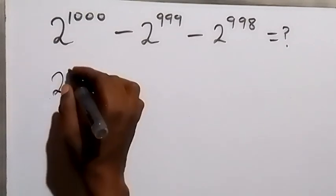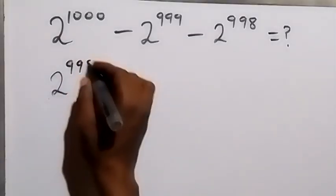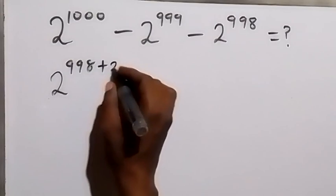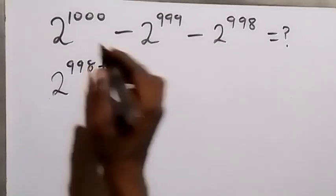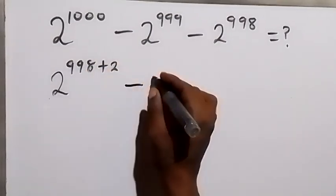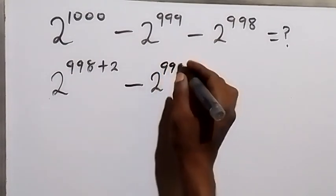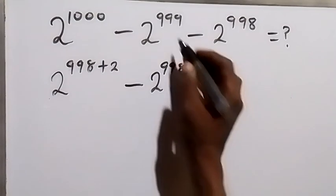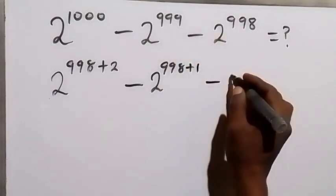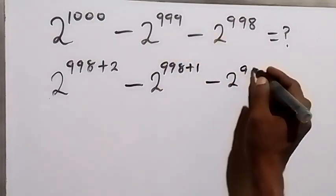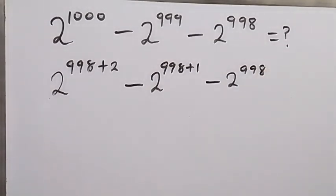2 raised to power 998 plus 2, which is the same thing as 1000, minus 2 raised to power 998 plus 1, that will give us 999, then minus 2 raised to power 998.